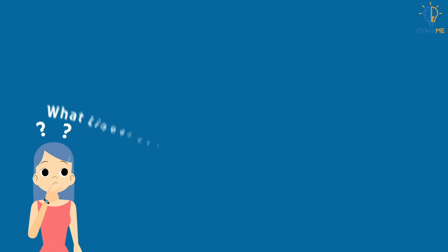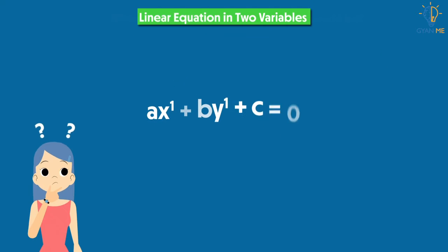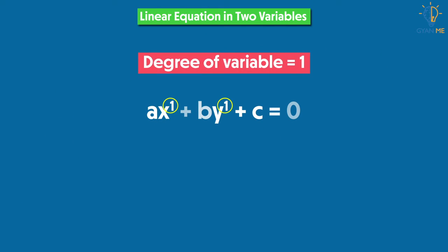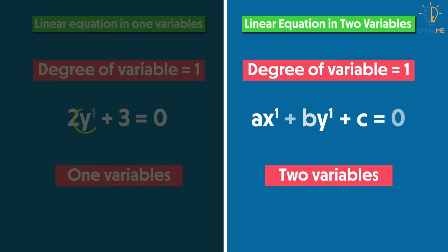Can you guess what a linear equation in two variables would be? As the name suggests, it is an equation with degree 1 but having two variables. Just like a linear equation in one variable has one unknown, a linear equation in two variables has two unknowns in the same equation.